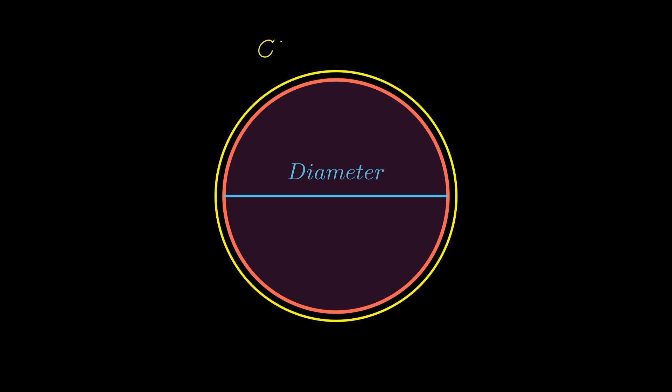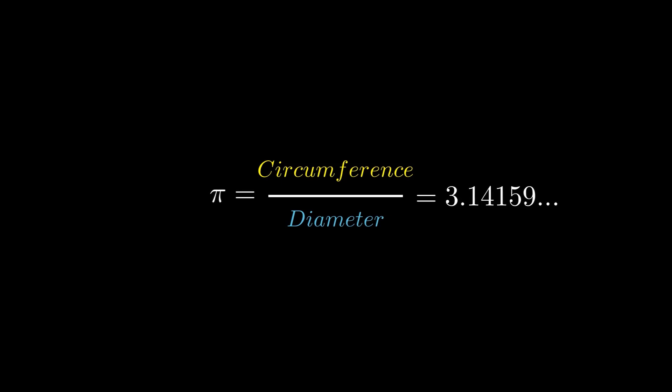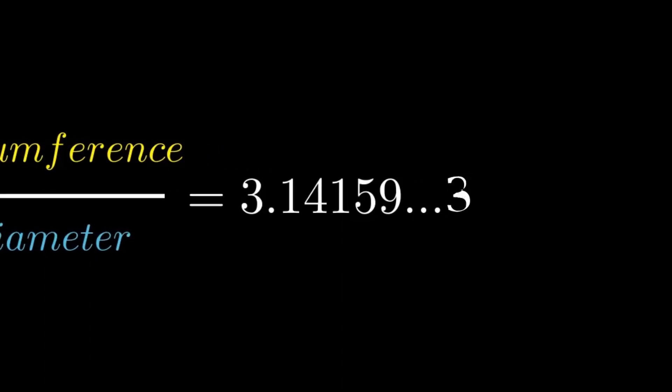It is defined as the ratio between a circle's diameter and circumference. This number never ends and never repeats.